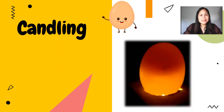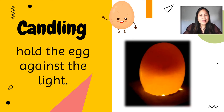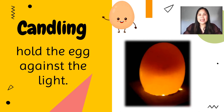Another method is candling. Hold the egg against the light. Candling is the process of holding a strong light above or below the egg to observe the embryo. A candling lamp consists of a strong electric bulb covered by a plastic or aluminum container with a handle and an aperture. The egg is placed against the aperture and illuminated by the light.